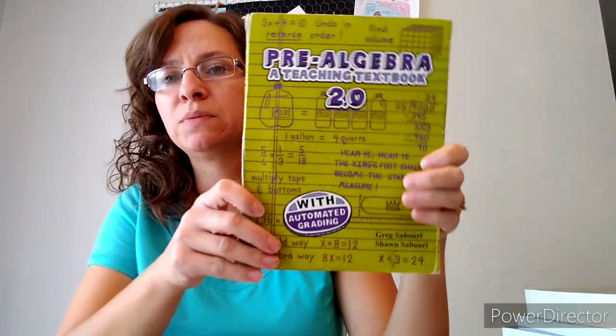Now my youngest, for her math she will be continuing with Teaching Textbooks and she'll be doing pre-algebra. She's doing great with Teaching Textbooks. She's been doing it since level four. It was not a good fit for my oldest last year - it was a nightmare - but for my youngest it hasn't been a problem at all.